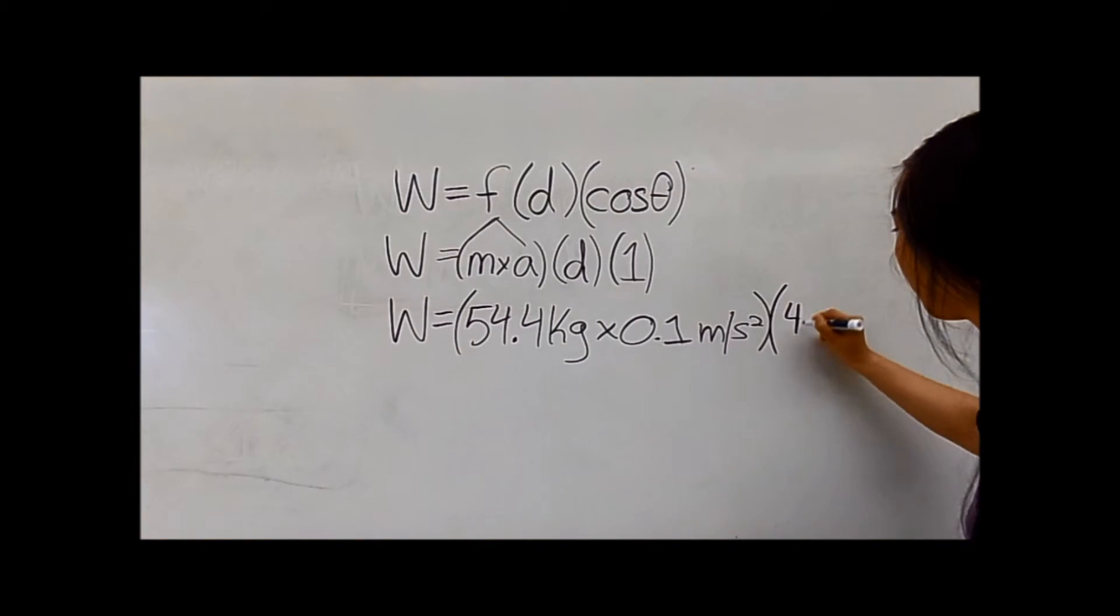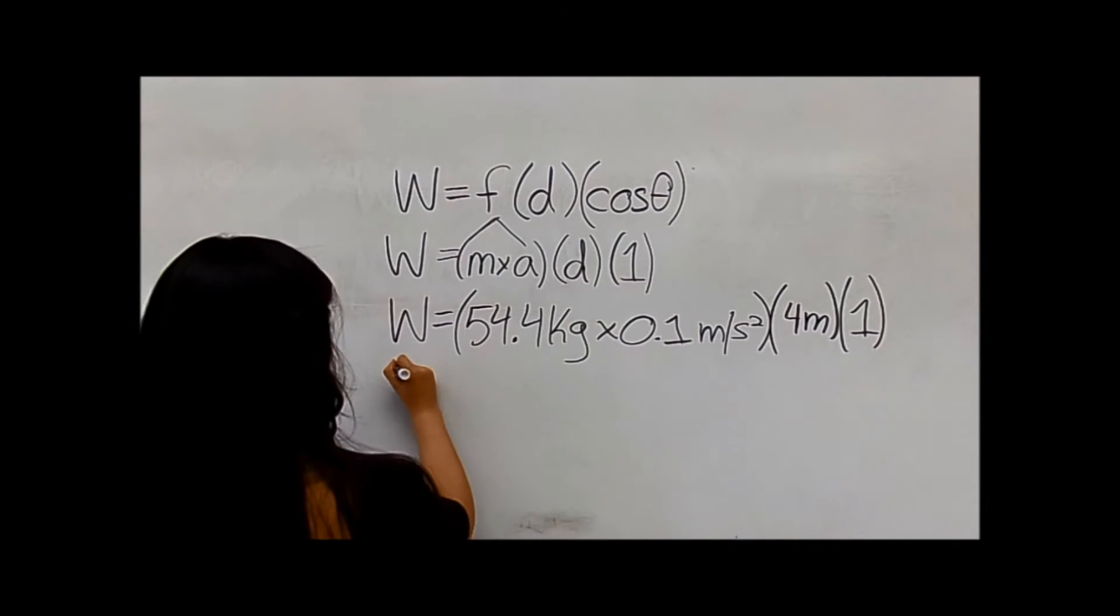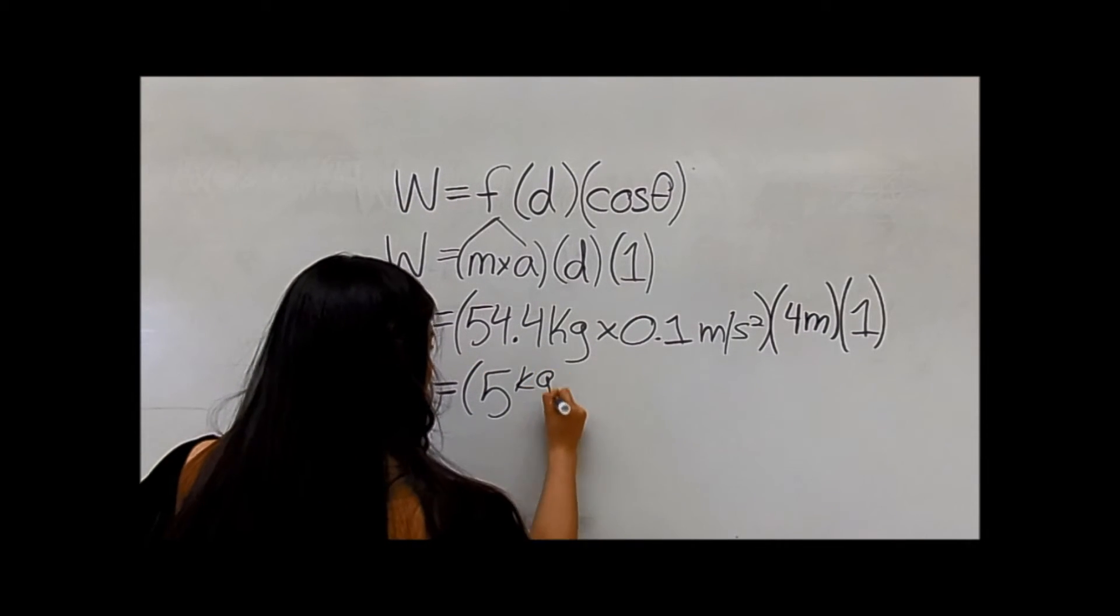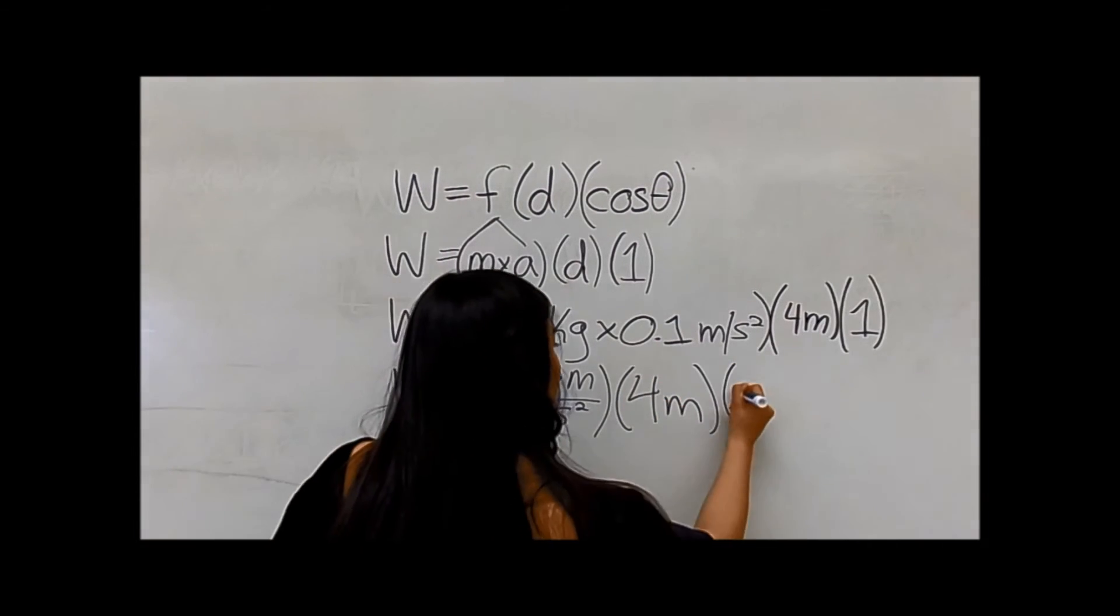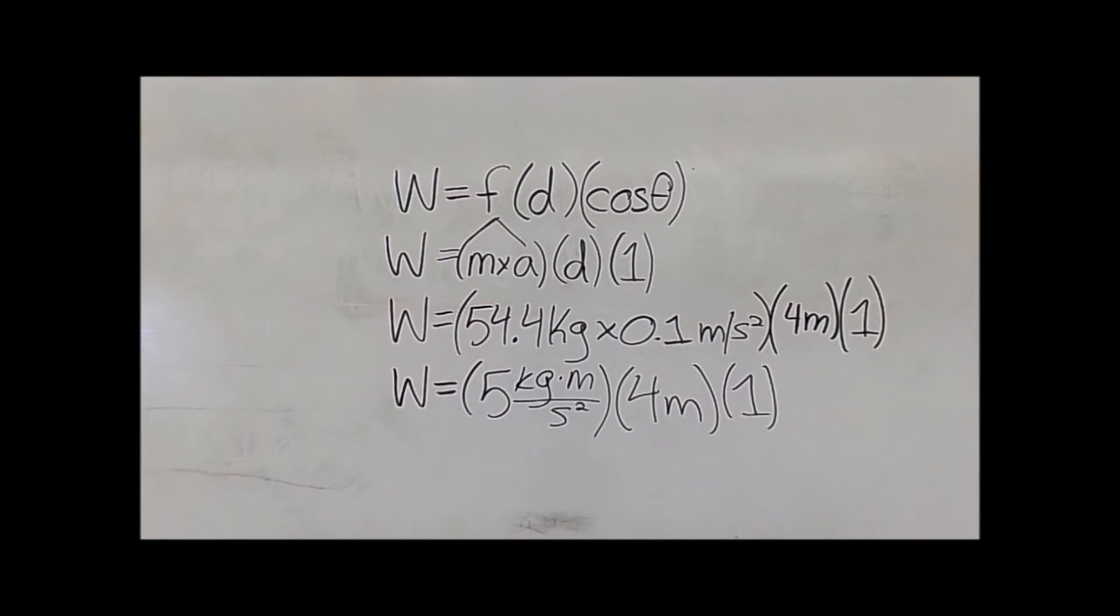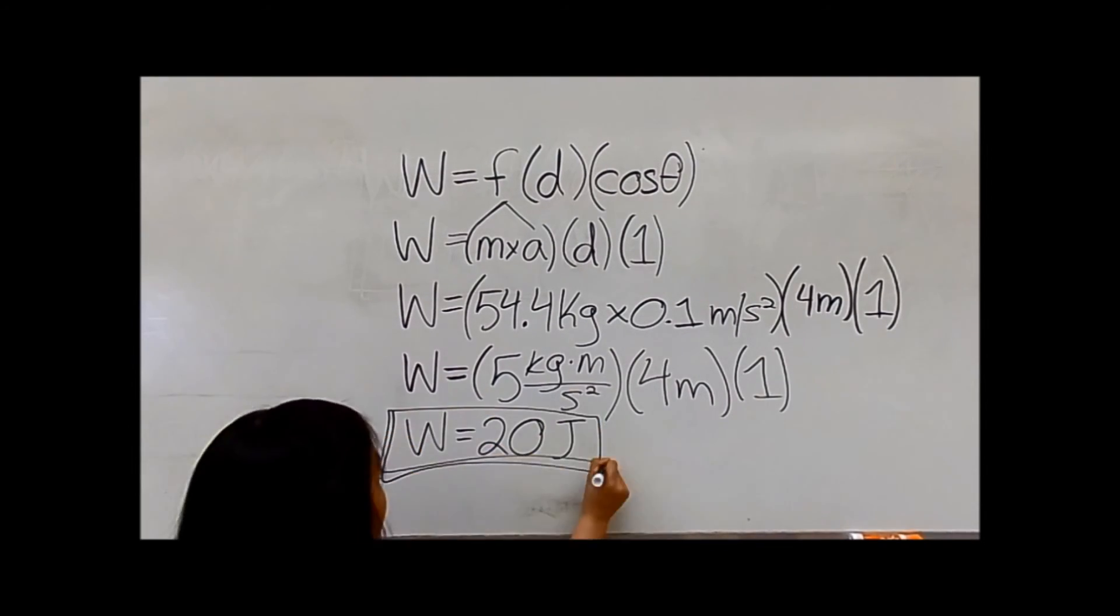Force equals 5 newtons. A newton is kilograms times meters per second squared. Force times the distance of 4 meters times 1 equals 20 joules. Connor does 20 joules of work to get across the monkey bars.